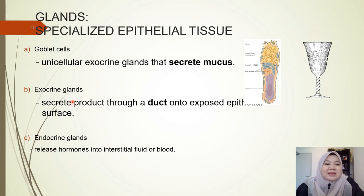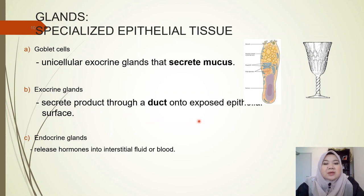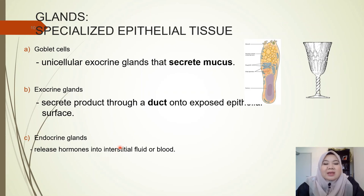The next type is exocrine glands, which secrete their products through a duct or tube onto exposed epithelial surfaces. Then we have endocrine glands, which are ductless glands — they don't have any duct or tube. Instead, they release their products or hormones into interstitial fluid or blood.